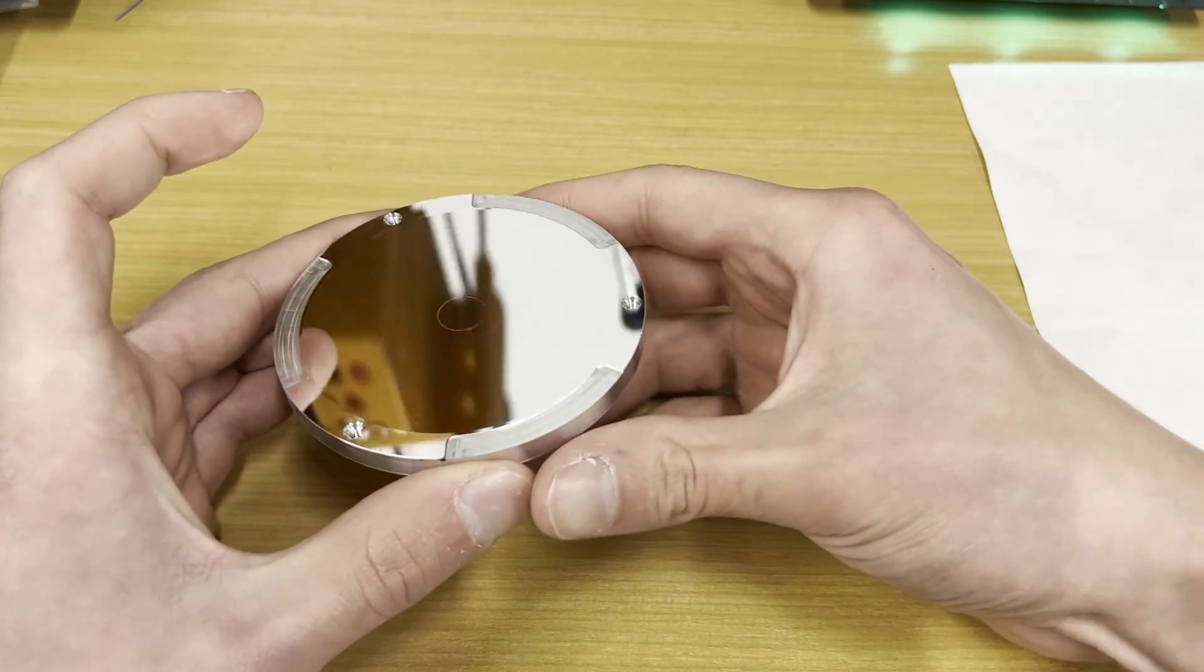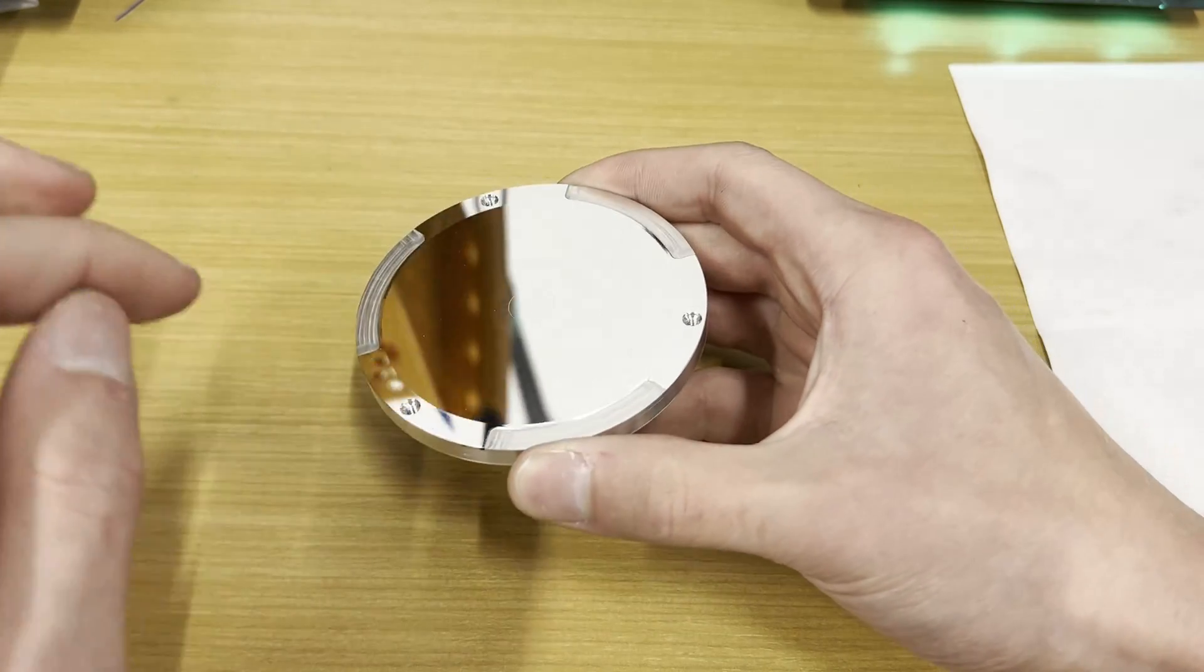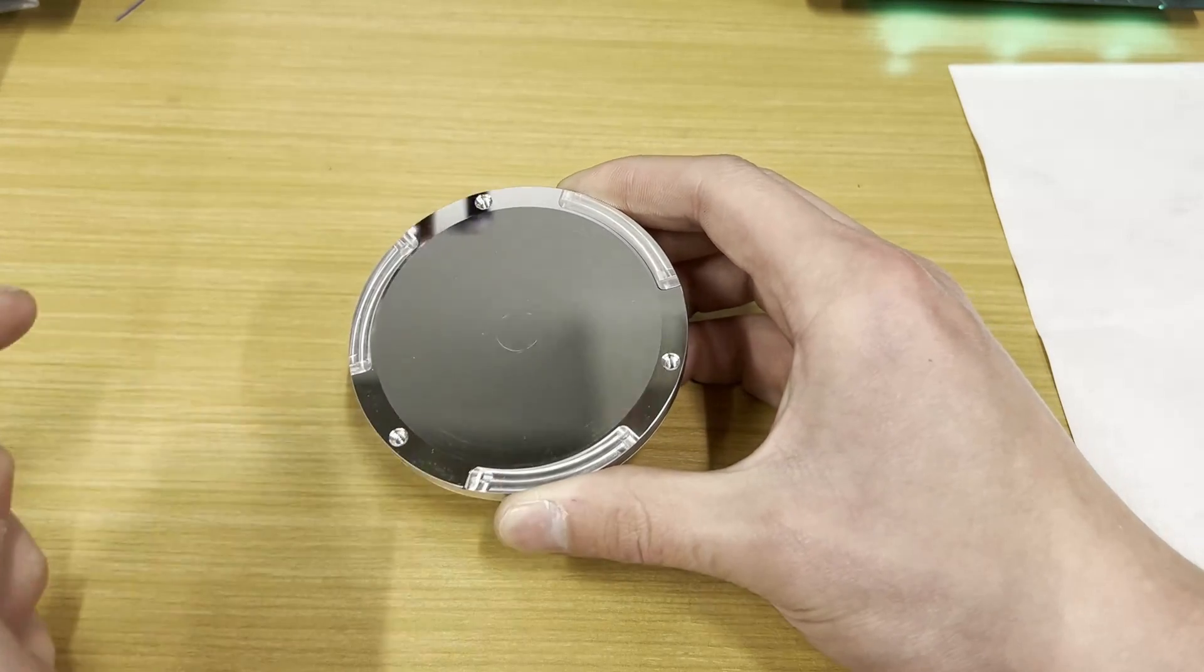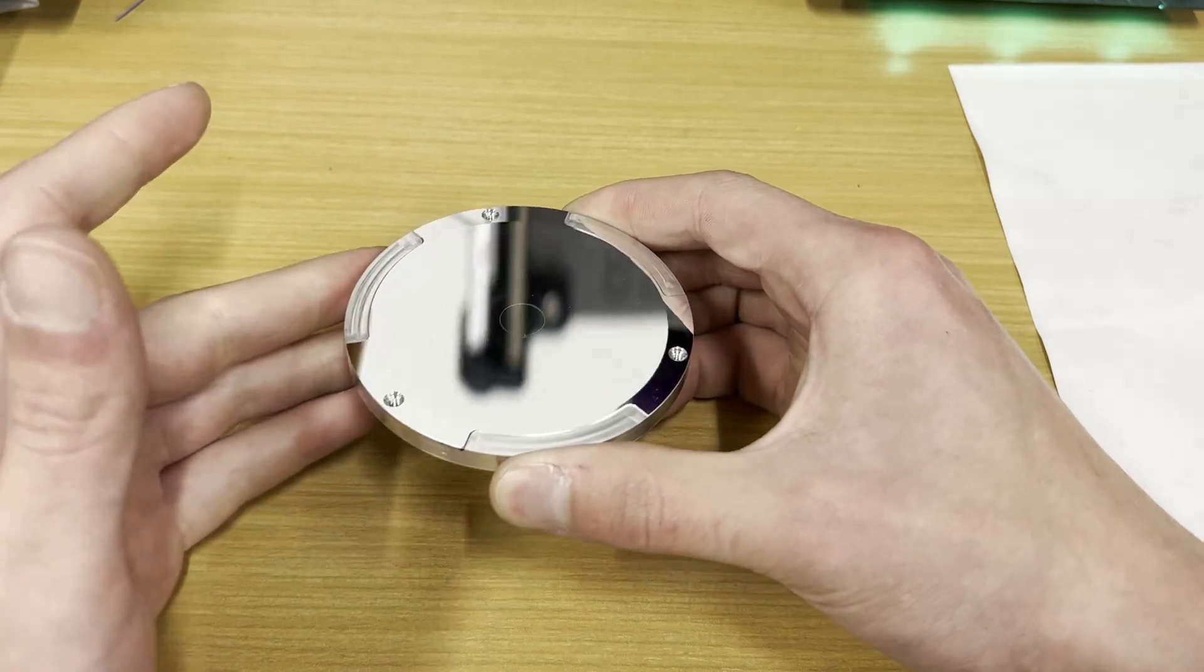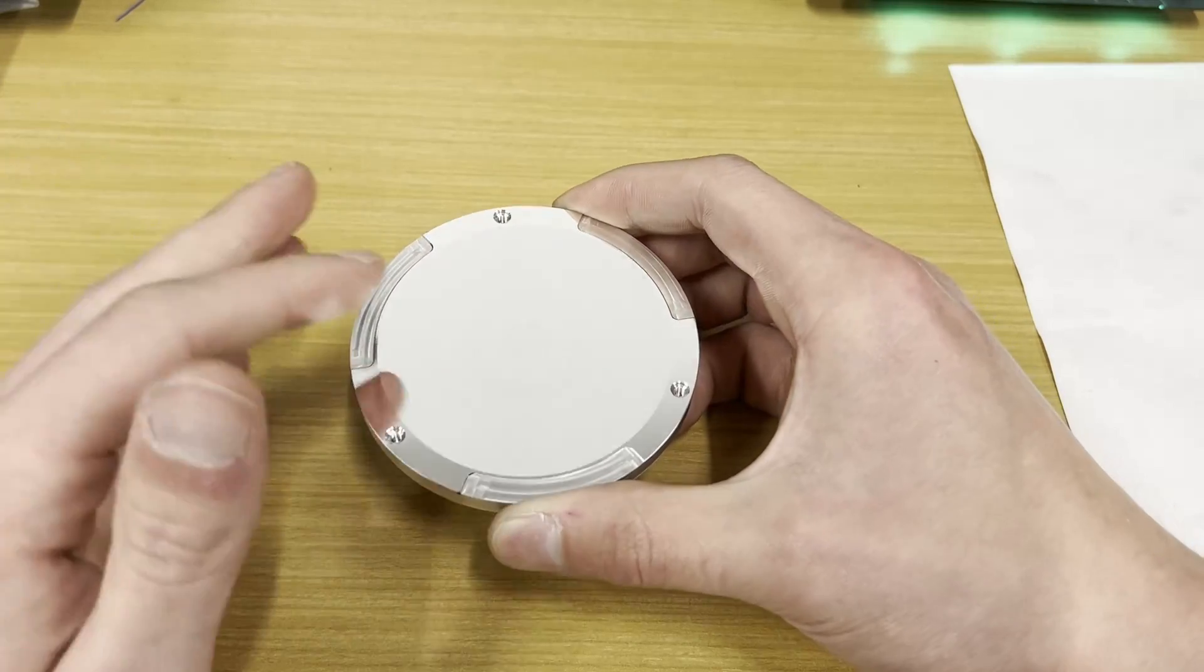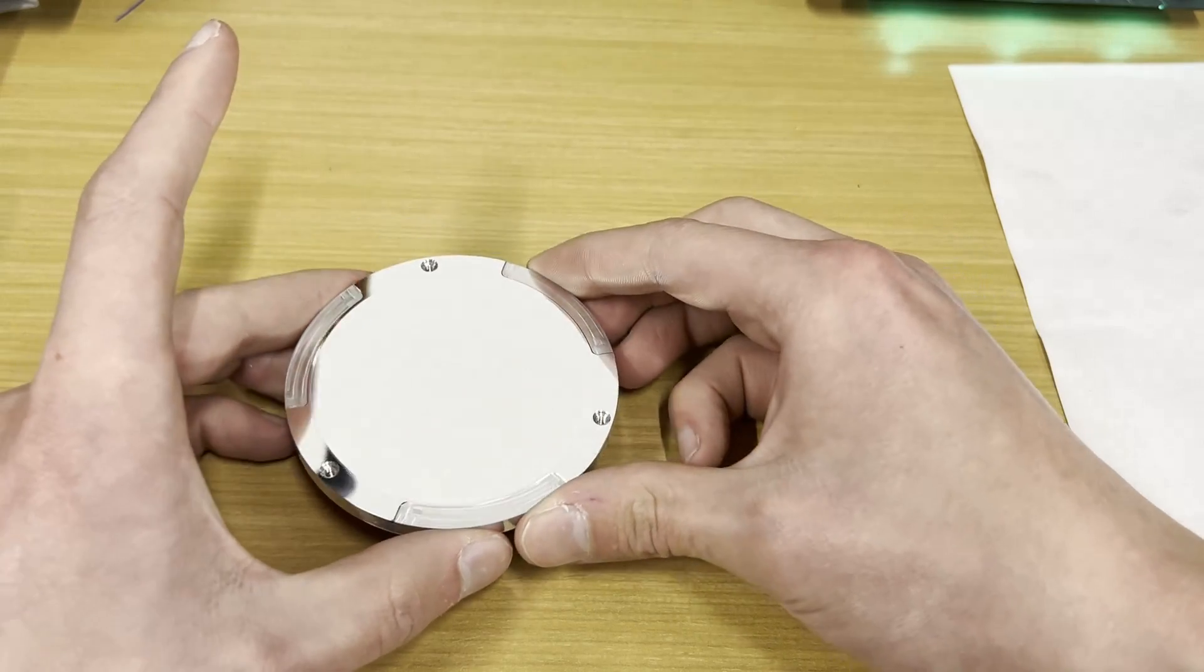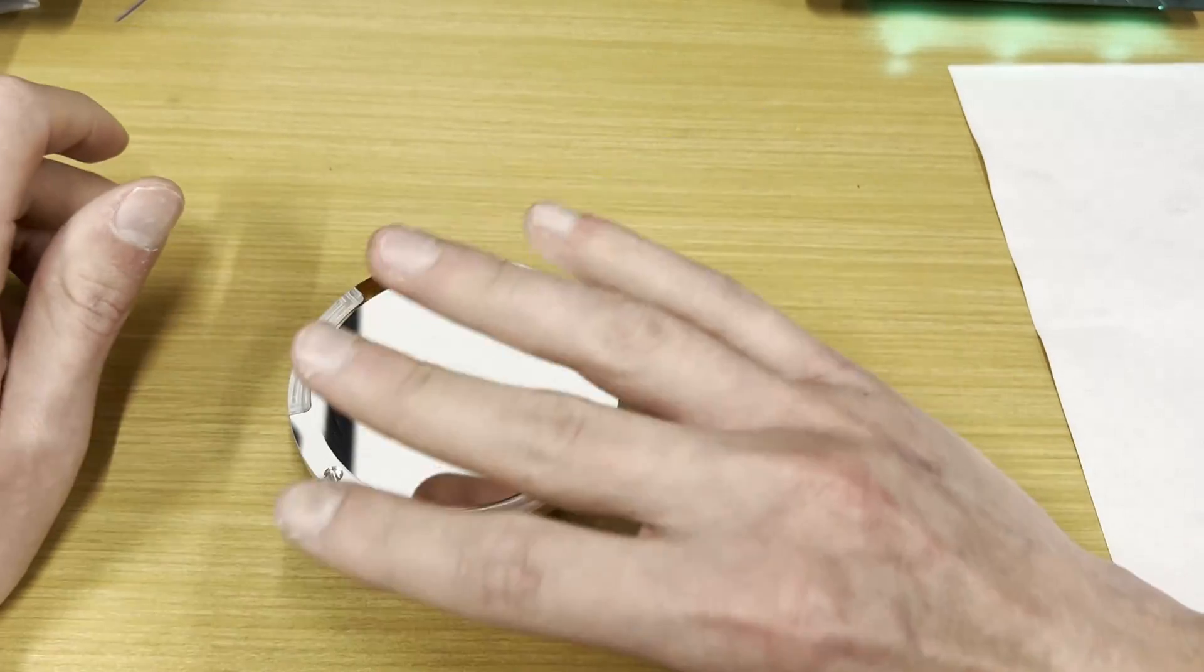I say roughing and what I mean by that is I did a finishing pass on here with a 20 millionth depth of cut with an extremely slow, micron or so feed per rev. I did a finishing pass but it's still roughing because I've not measured this yet.